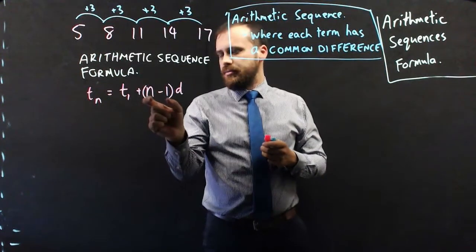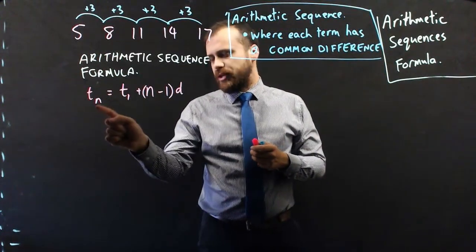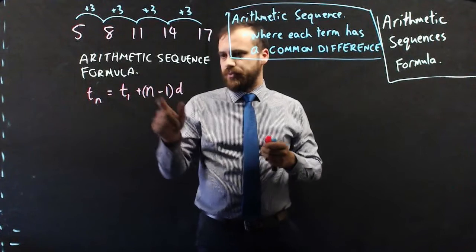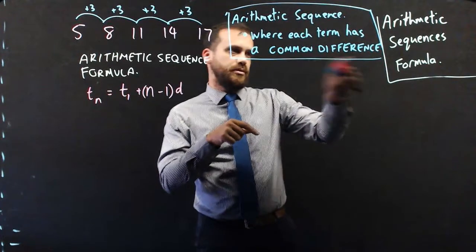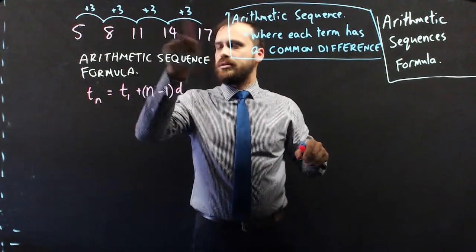plus n minus 1, so if we're trying to find the 100th term, 100 minus 1, times d. d stands for common difference.